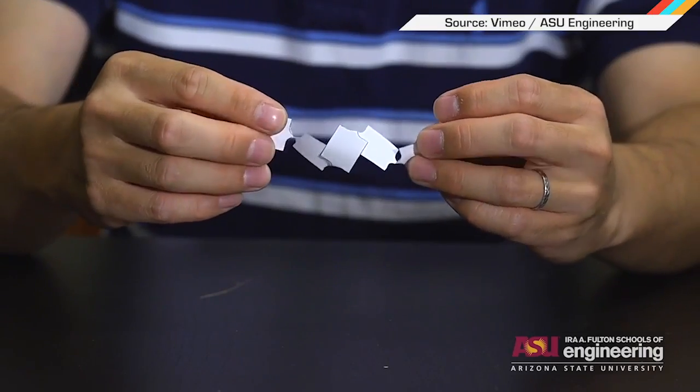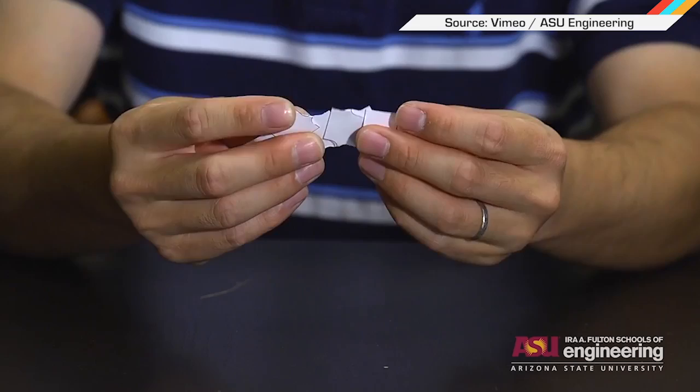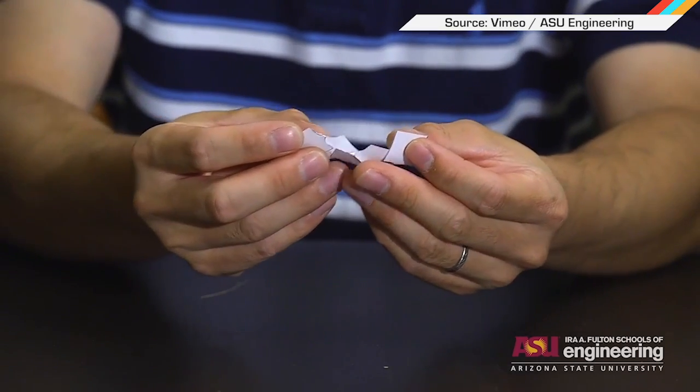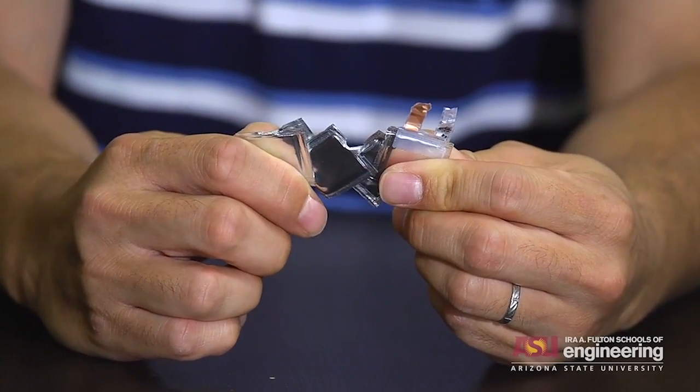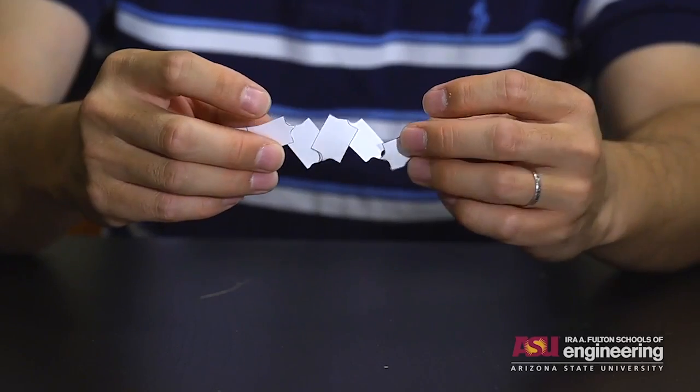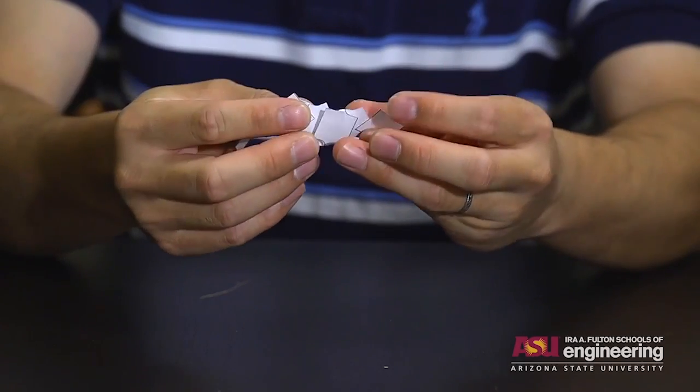Here we will demonstrate that the Kirigami-based stretchable battery is able to power a Samsung Gear 2 smartwatch. Researchers at Arizona State University used the ancient art of Kirigami, Origami's cousin, as inspiration for basically the coolest battery you've ever seen.